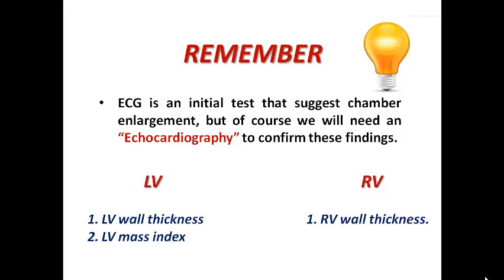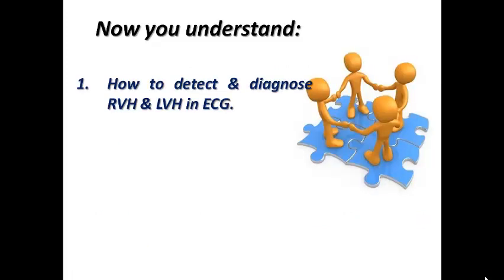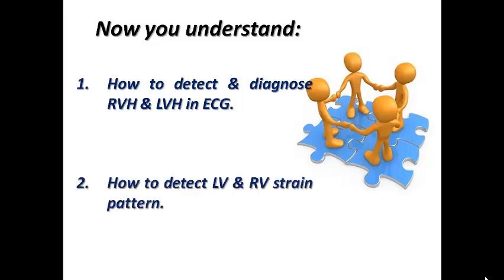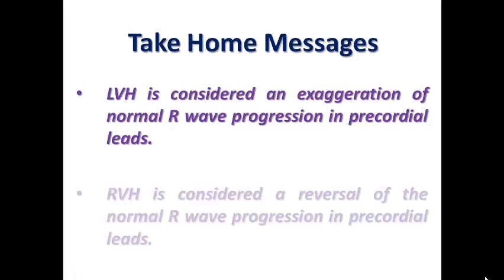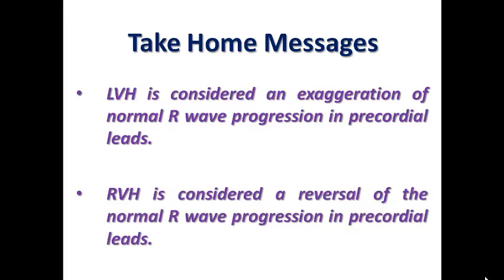If you diagnose LVH on ECG, you need an echo to measure LV wall thickness and LV mass index, and similarly for RVH. As a take-home message: LVH is an exaggeration of the normal R-wave progression in precordial leads — remember the voltage criteria cut-off points for the Sokolov-Lyon index, R-wave in aVL, and Cornell voltage criteria. RVH is a reversal of the normal R-wave progression in precordial leads — remember the cut-off points for the Sokolov-Lyon index for RVH and the presence of a total R-wave in V1 more than 7 mm. Thank you very much for your attention.